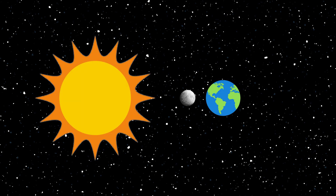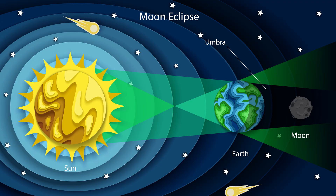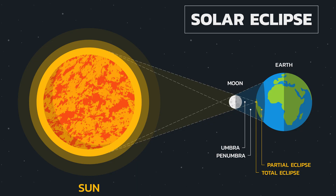That means it's unusual for the Moon, the Earth, and the Sun to actually line up, but it does happen. And it can do one of two things. If it's lined up Sun, Earth, Moon, that's a lunar eclipse. On the other hand, if the Moon is between the Earth and the Sun, that's a solar eclipse.